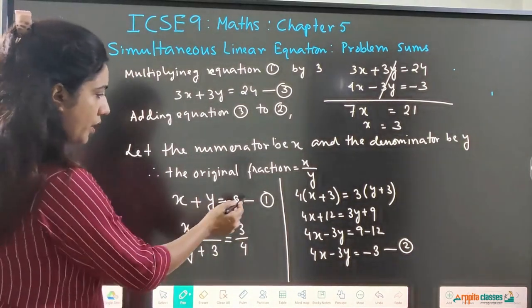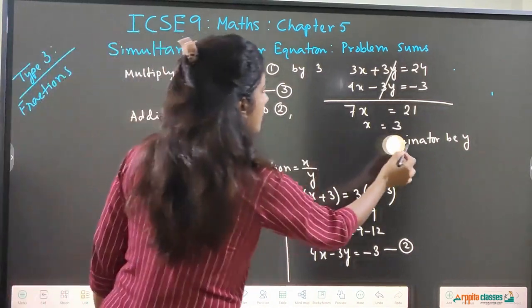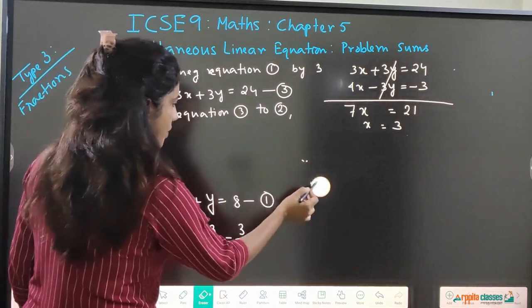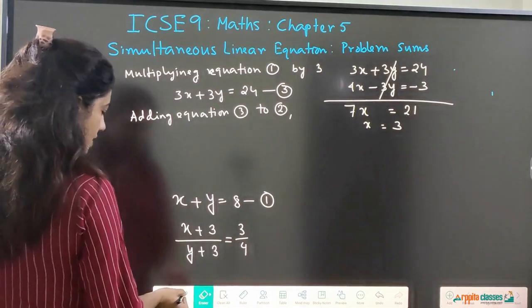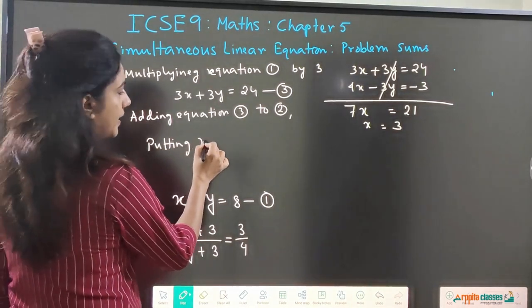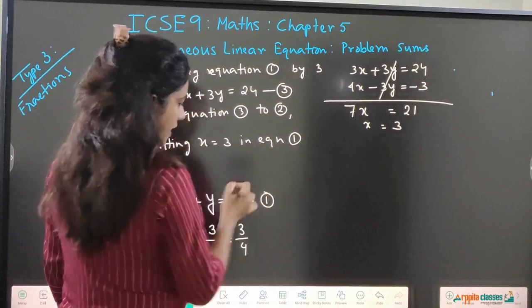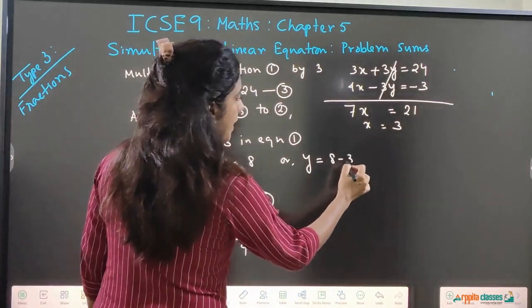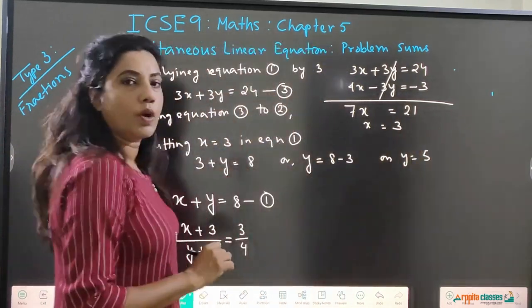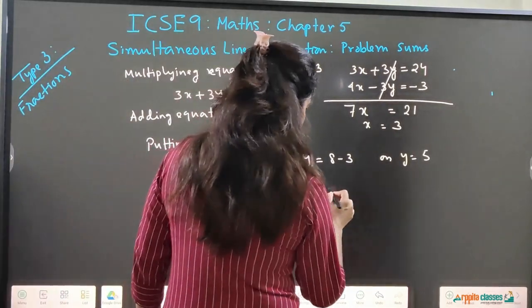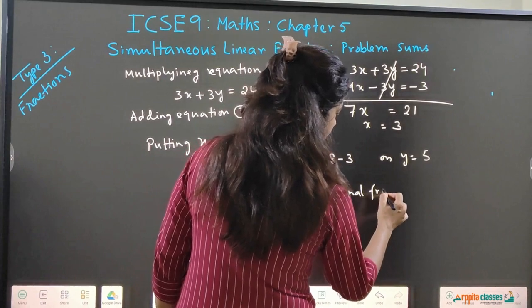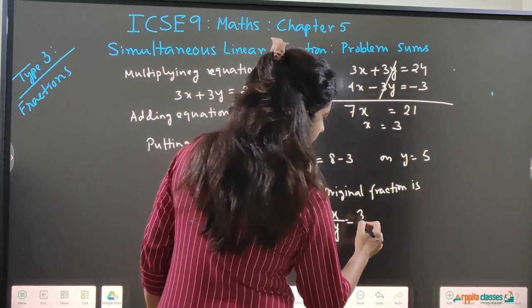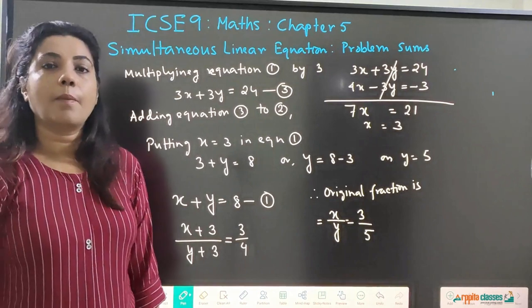We put x = 3 into equation 1: 3 + y = 8, so y = 5. We got x = 3 and y = 5. Therefore the original fraction is x upon y, which is 3 upon 5.